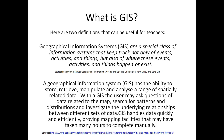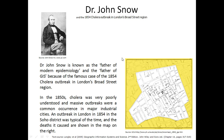A GIS has the ability to store, retrieve, manipulate, and analyze a range of spatially related data. The user may ask questions of data related to the map, search for patterns and distributions, and investigate the underlying relationships between different sets of data. GIS actually handles data quickly and efficiently and provides a mapping facility that may have taken many hours to complete manually — this is how computer science and databases came into the picture.